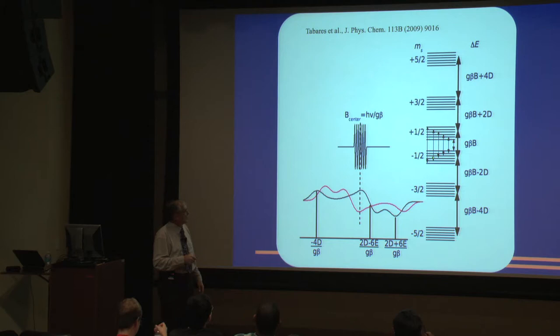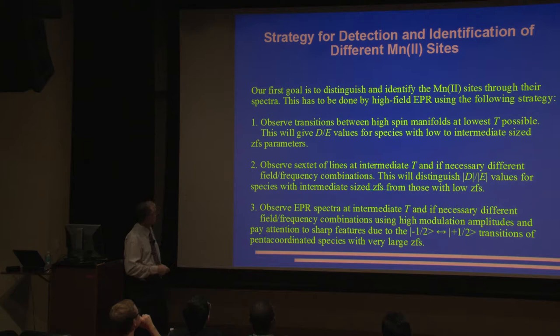At three Kelvin, I'm going to see this transition. I can simulate that, get my D parameters, and then I can go to higher temperatures - that would be 20 Kelvin. I can study these transitions and look at the broadening. If they're very broad, that tells me there are also species there that have higher, larger D parameters. So are we ready to look at spectra at this point? Let's go.